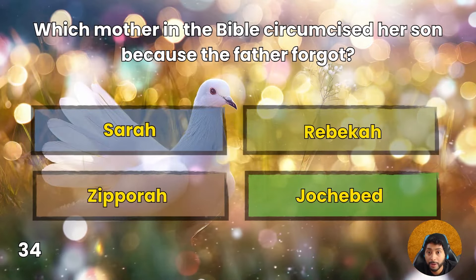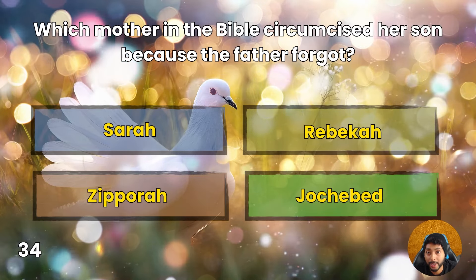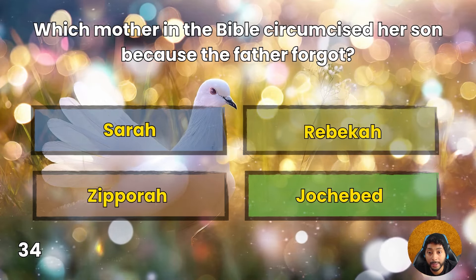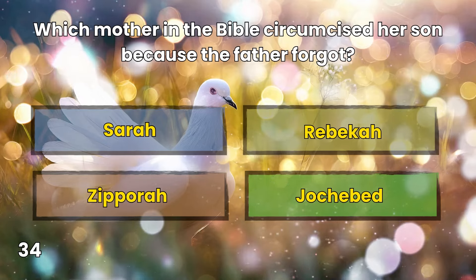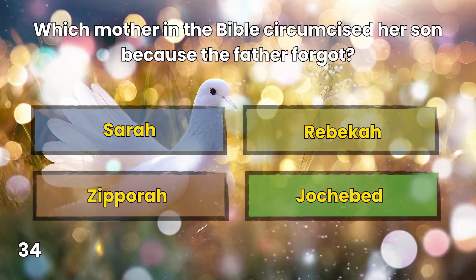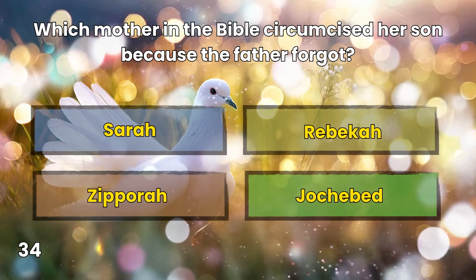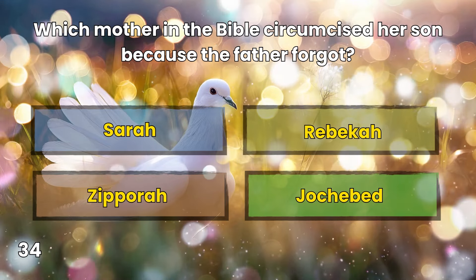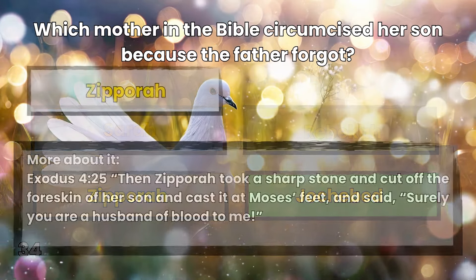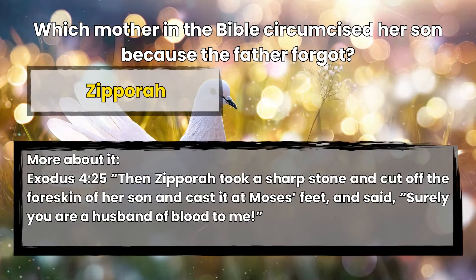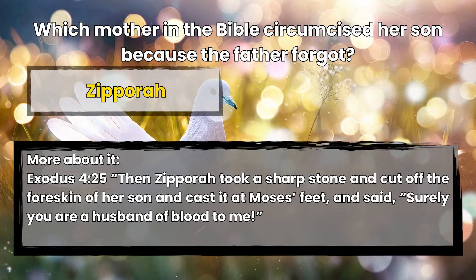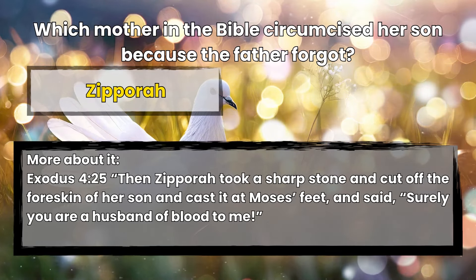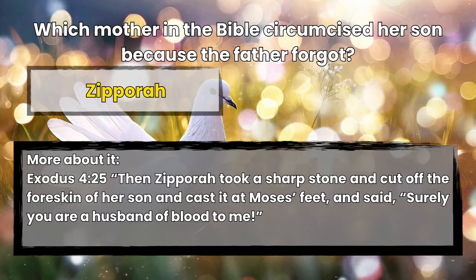Question 34: Which mother in the Bible circumcised her son because the father forgot? Sarah, Rebekah, Zipporah, or Jochebed? Zipporah. Exodus 4:25 — Then Zipporah took a sharp stone and cut off the foreskin of her son and cast it at Moses' feet, and said, 'Surely you are a husband of blood to me.'